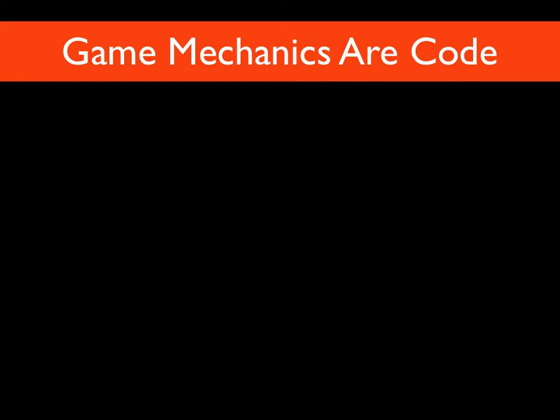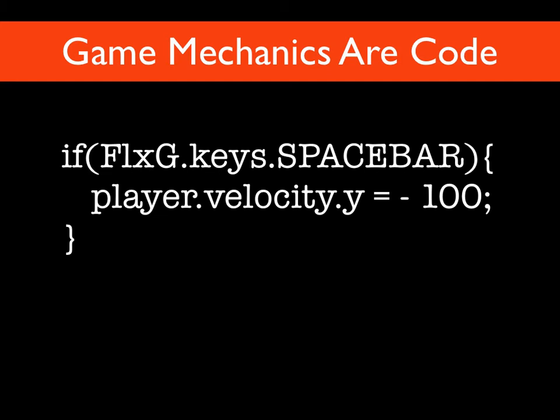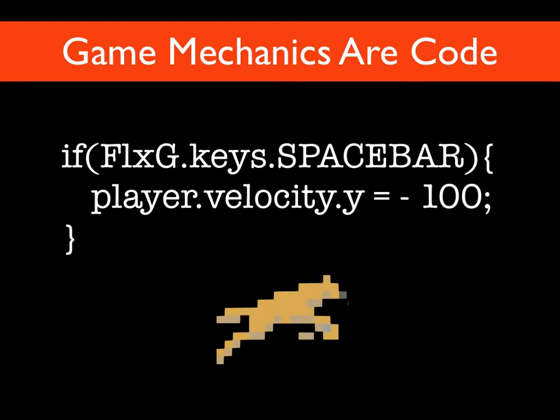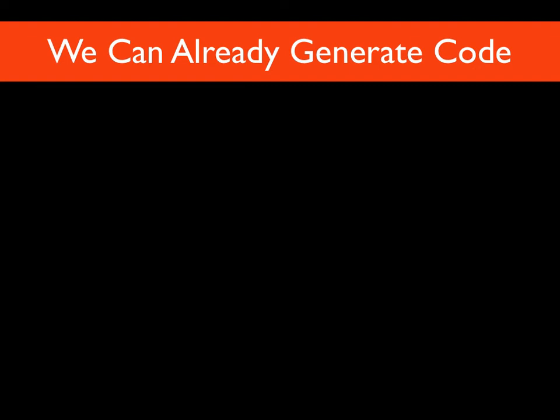So how do we get generality and novelty? At their base level, game mechanics are code. Here's a bit of code that says if the space bar is pressed, find the player object, access their velocity field and the y component, and set it to a minus value. In the game library Flixel, this takes the player object and moves it upward - like it's jumping. So if game mechanics are code, why haven't we just tried to generate code before? We actually have systems in programming languages that let us do this.